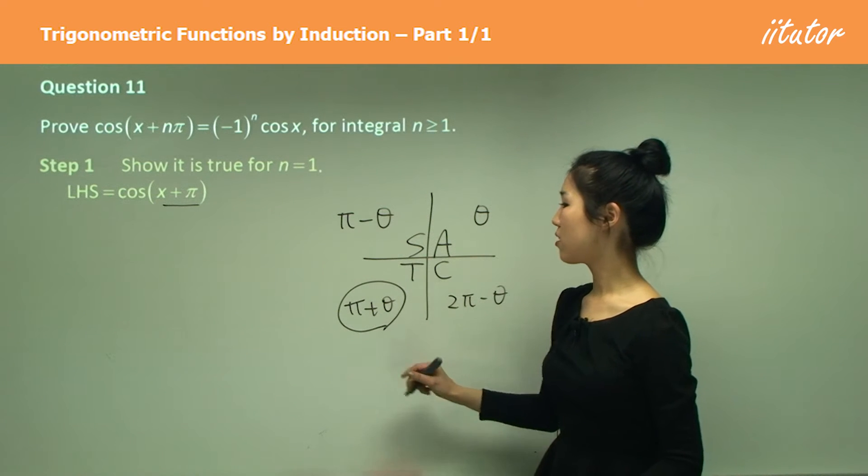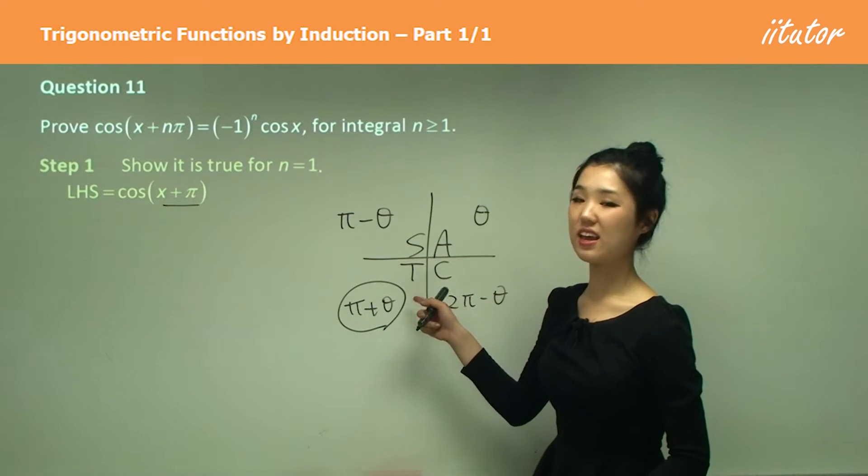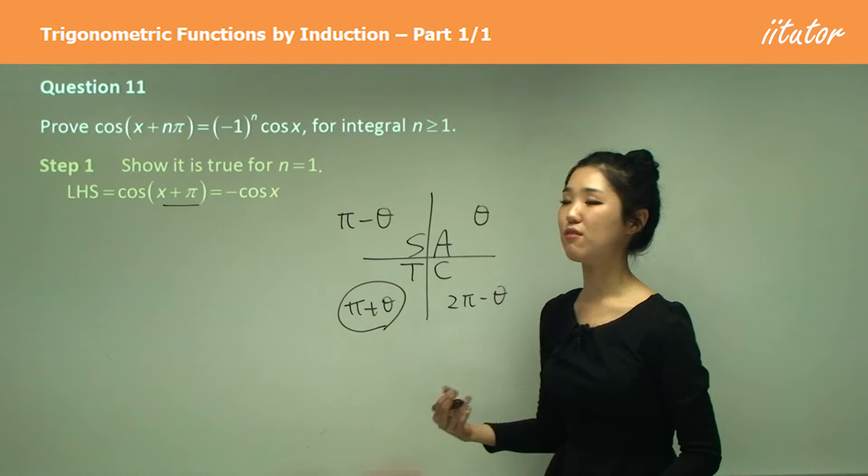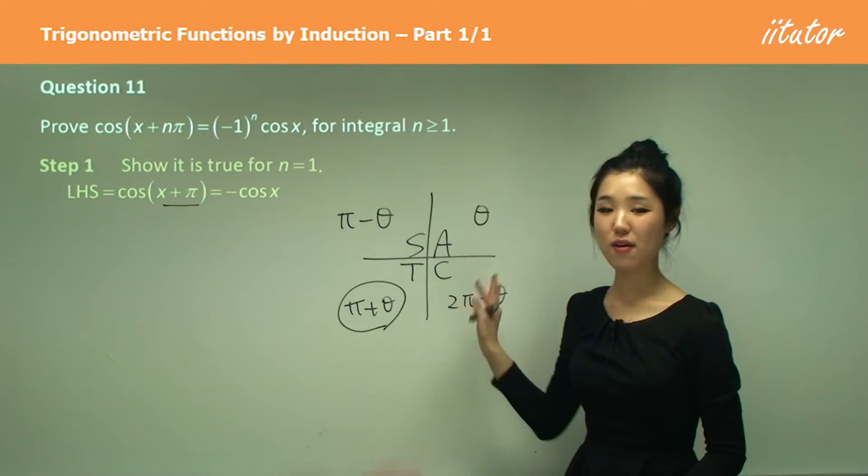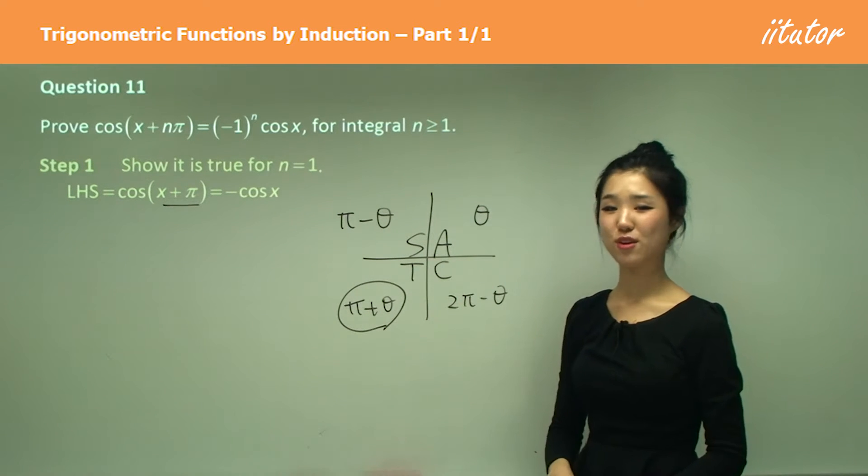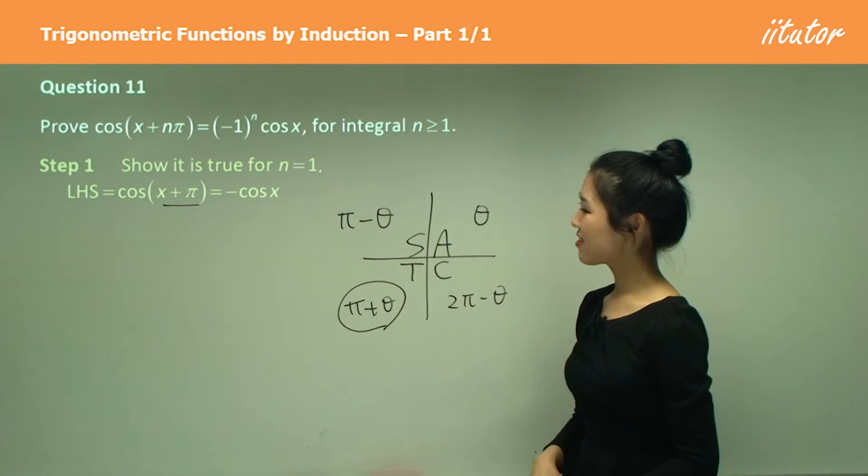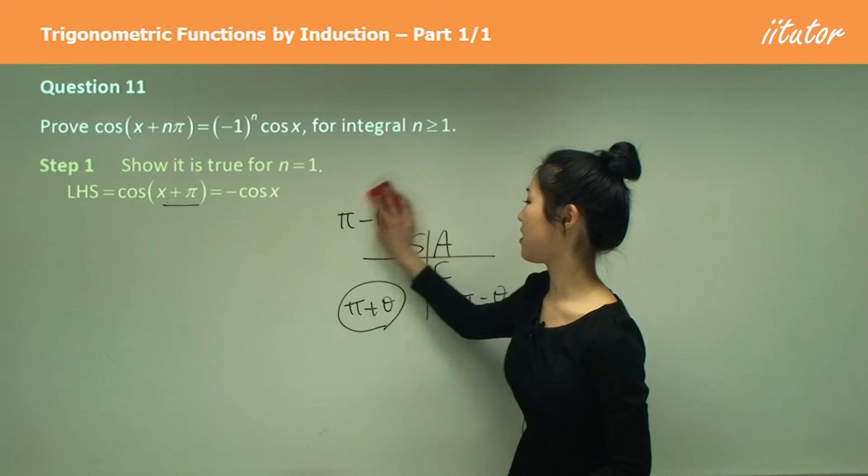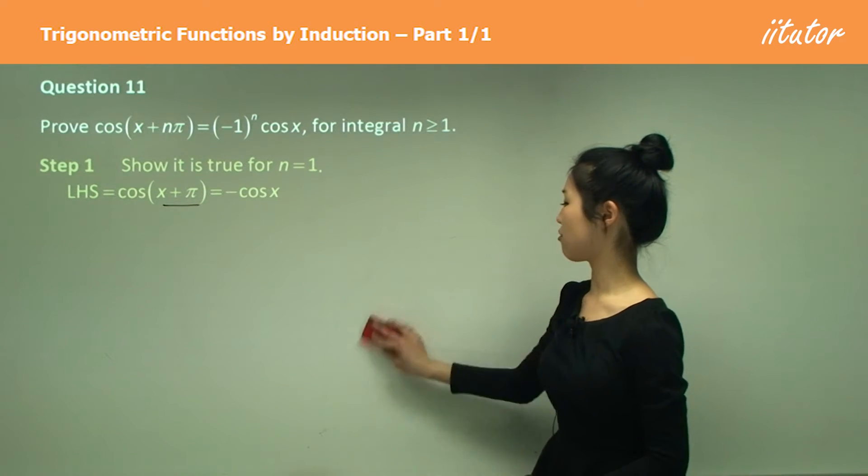But in this quadrant, cos is negative. So it's simply going to be negative cos x. Okay, just by the use of our trigonometric functions, which I'm pretty sure you guys are all good at. So that's our left hand side. I just used the stuff, all stations to central rule.